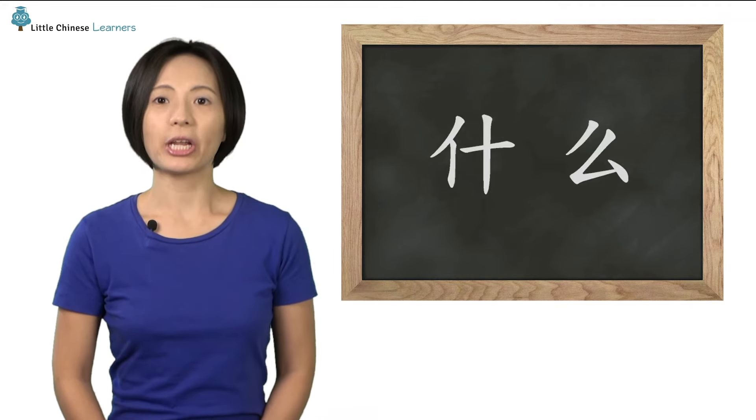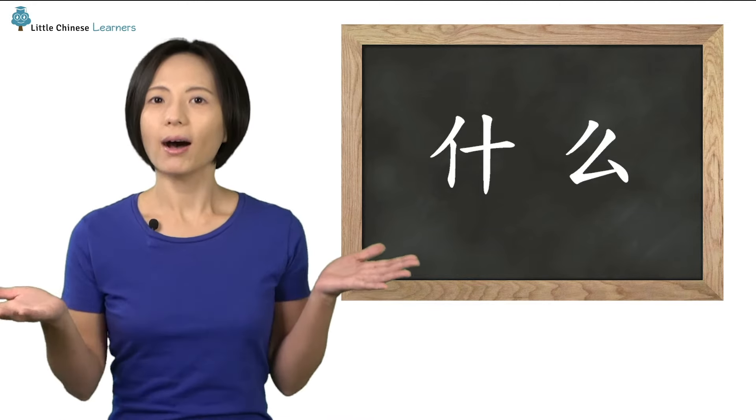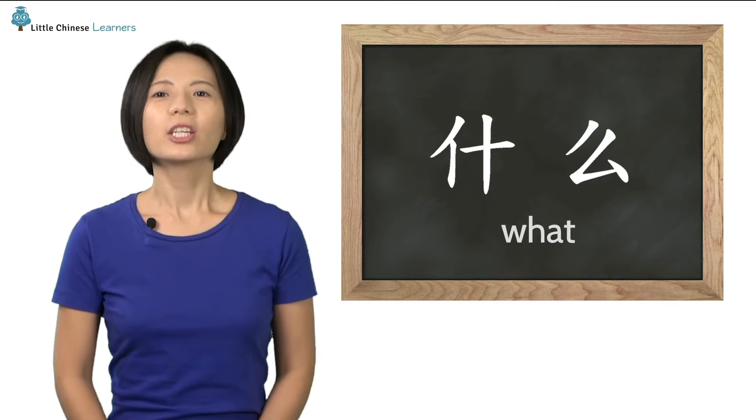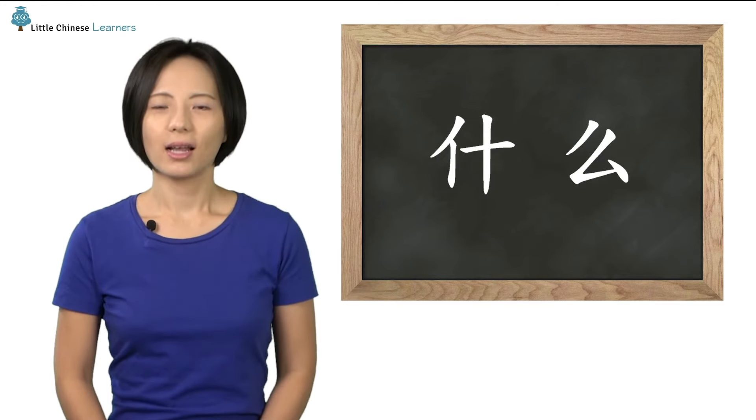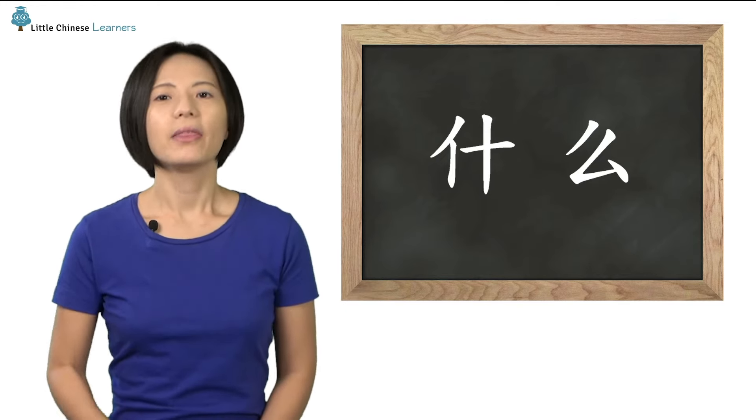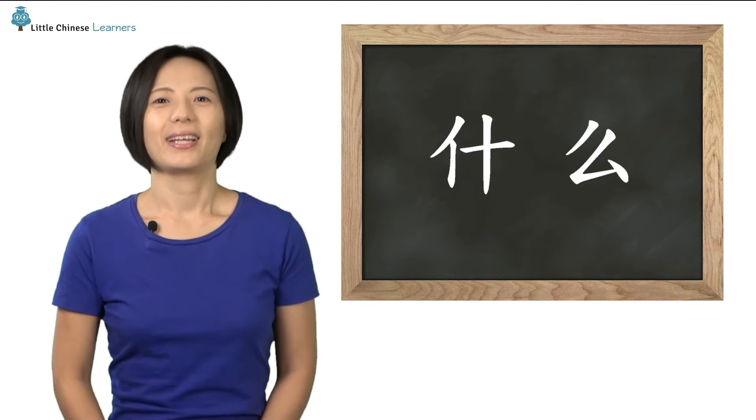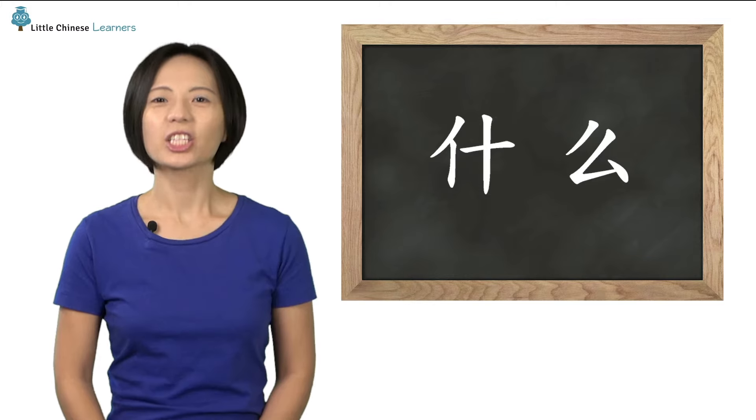The next two characters are often used together. 什么, it means what. Now you try it. Fantastic, 什么.